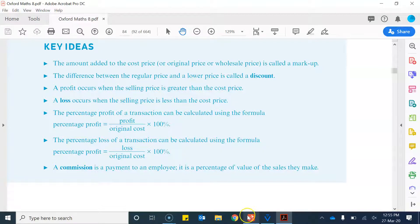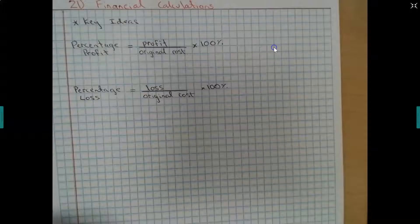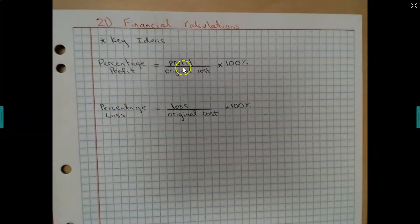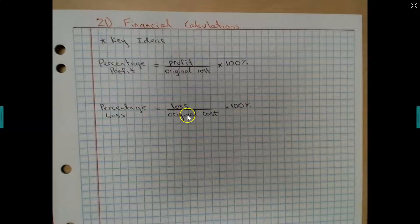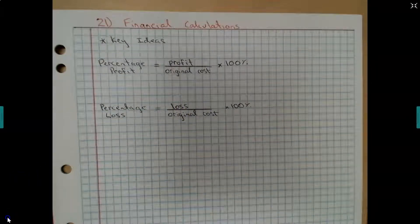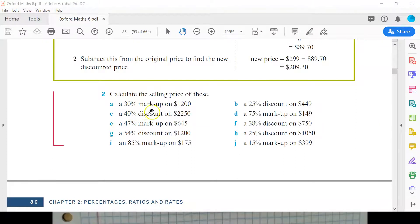So I just want you to note those two things there. Percentage profit is equal to profit over original cost times 100 and that gives you your percentage, and your percentage loss. So it's your loss divided by the original cost times 100%.